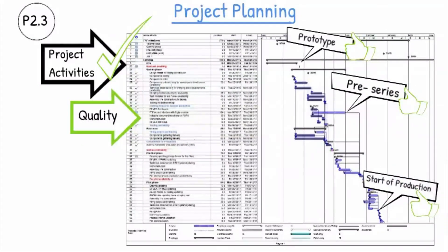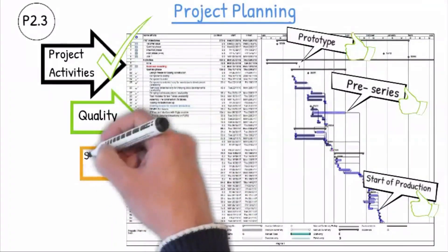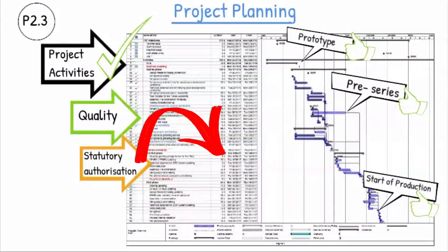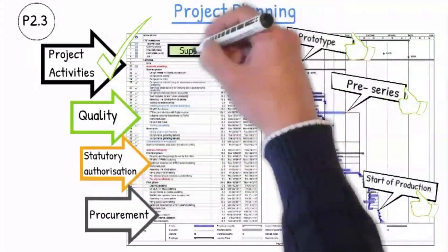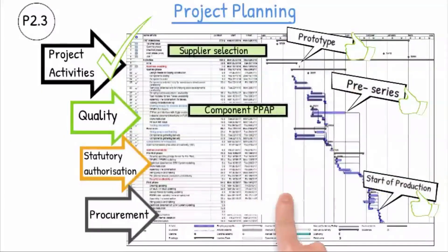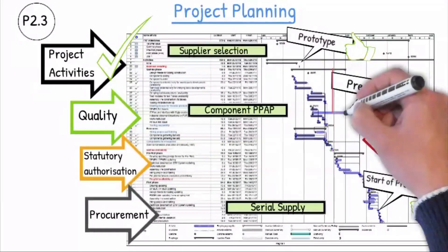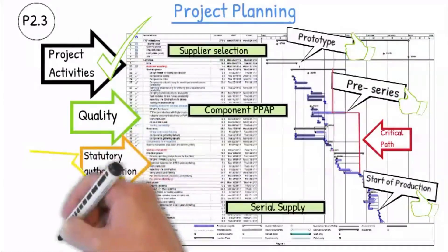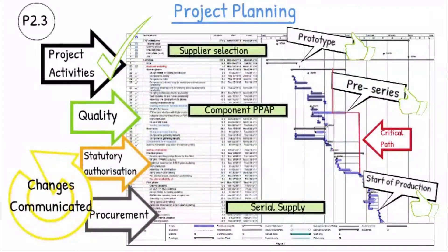The plans must take prototypes and pre-launch parts into account. If a statutory authorization procedure for a product is specifically required, the duration will be included in the project plan. The project plan will also include the detailed activities concerning procurement to ensure the suppliers are integrated in all activities. The critical path is generated from the project plan and takes account of critical delivery items to ensure that the customer's key milestones will be achieved. All changes made to the project planning will be communicated internally and coordinated with the customer if they are affected.